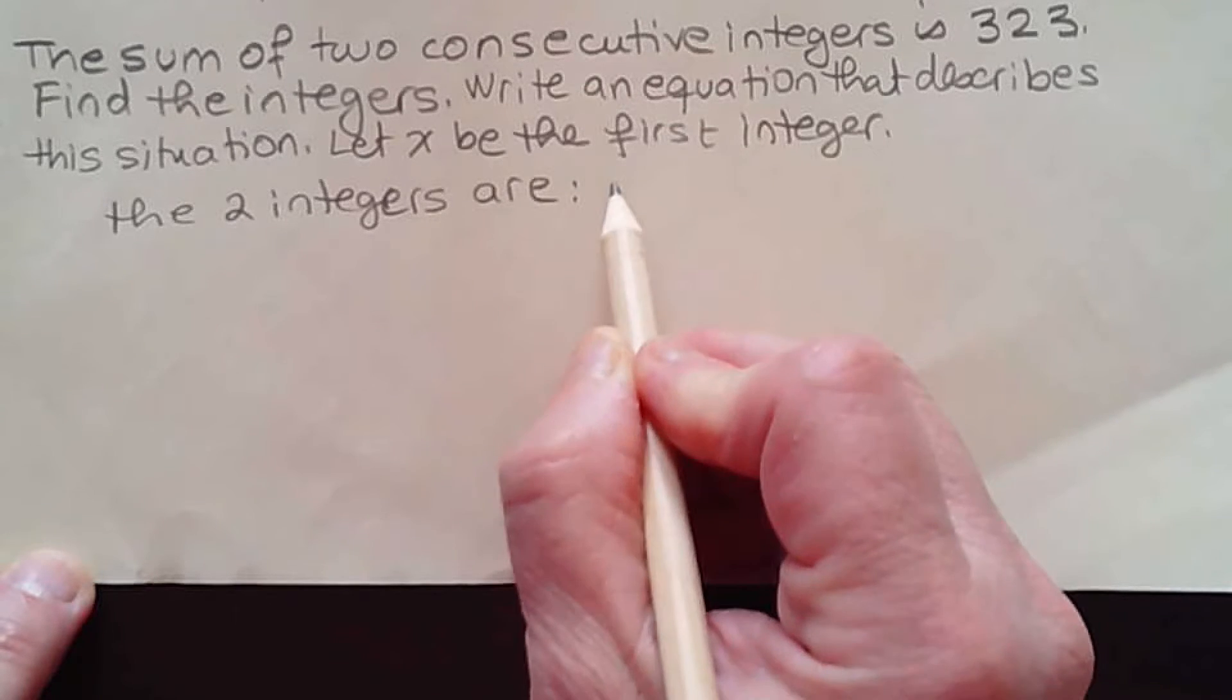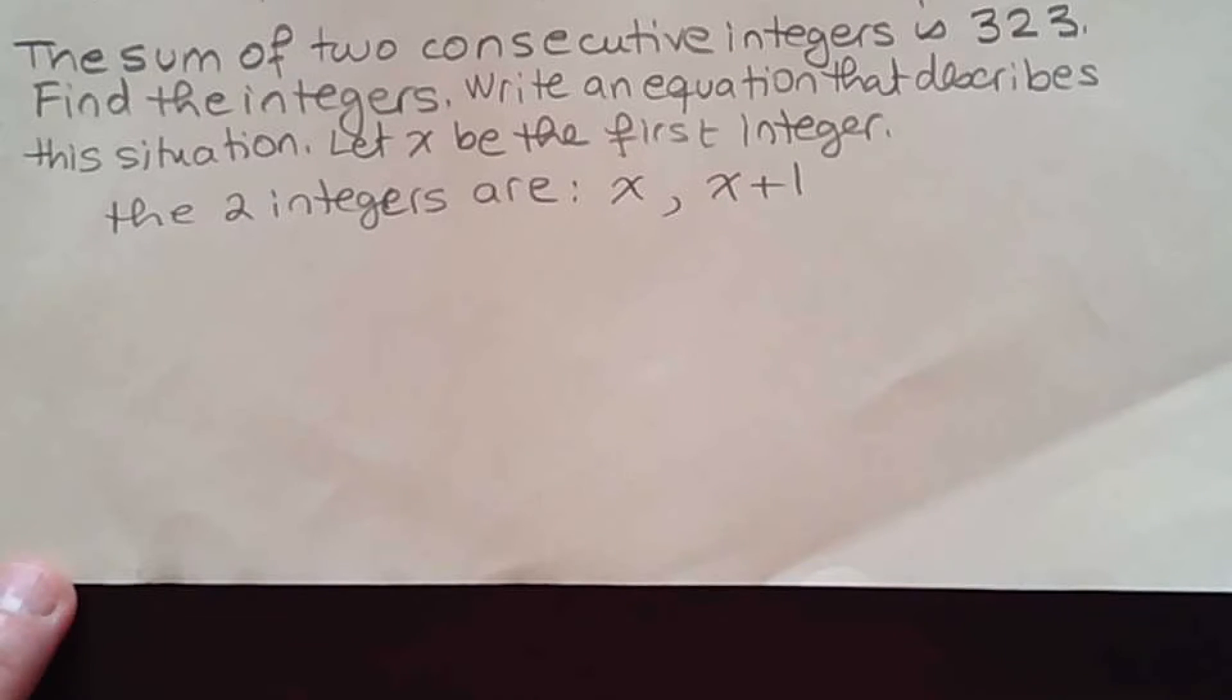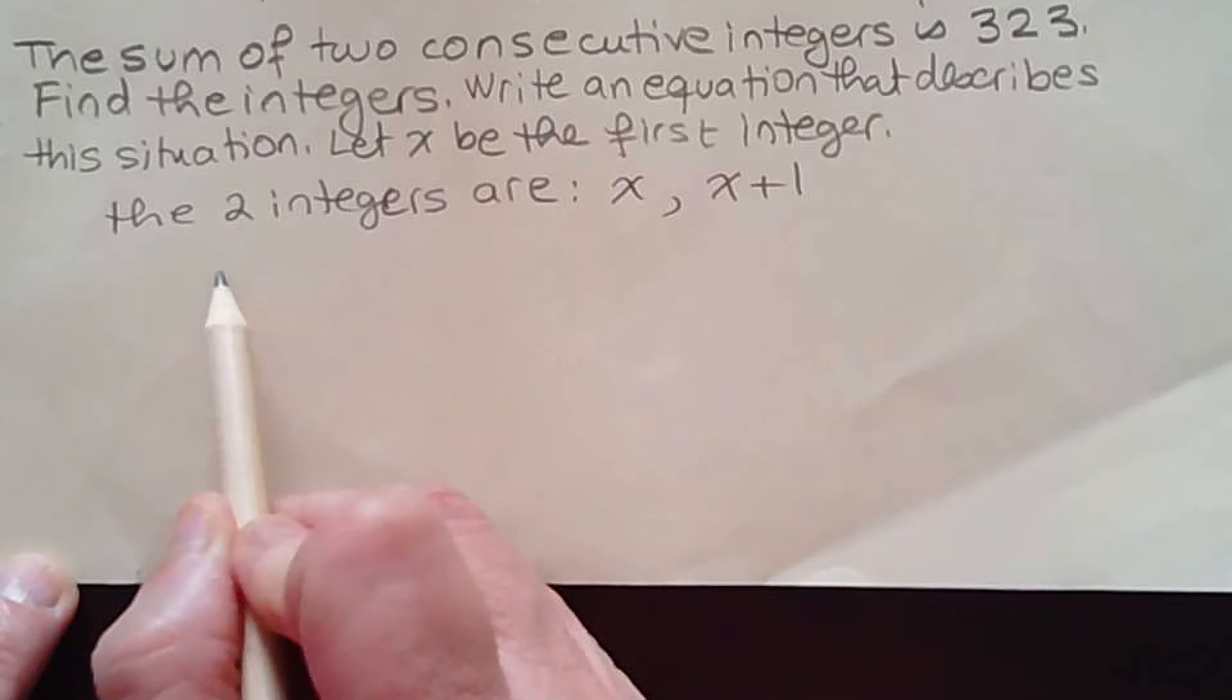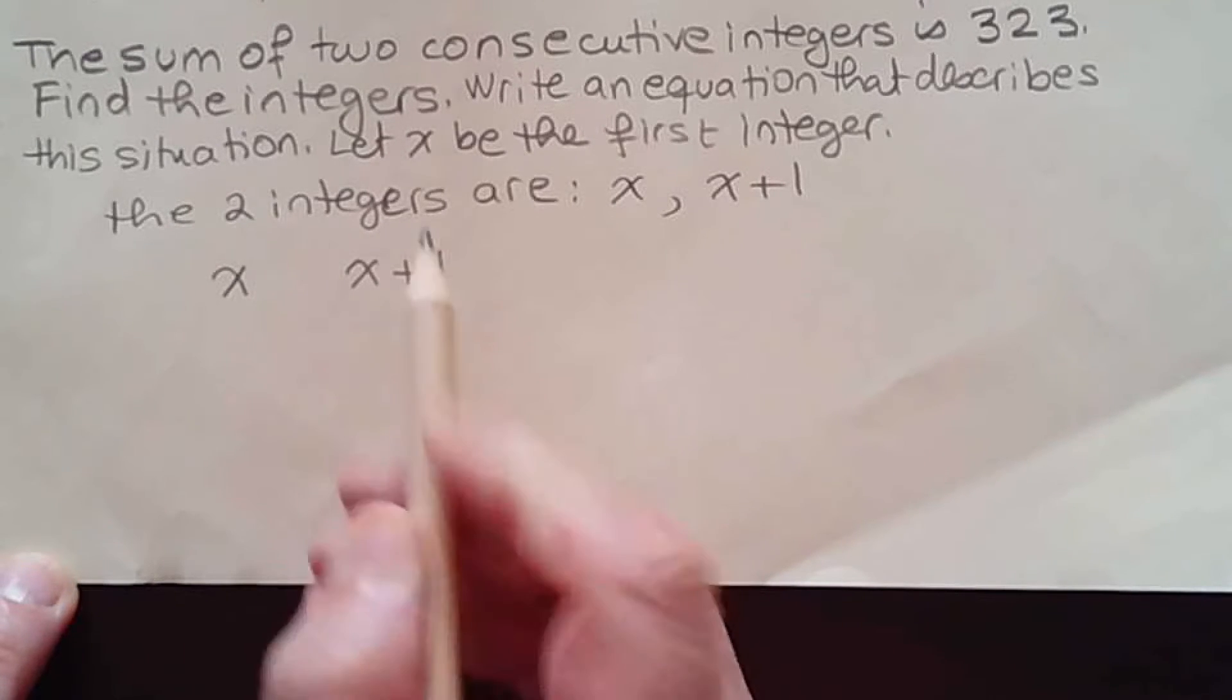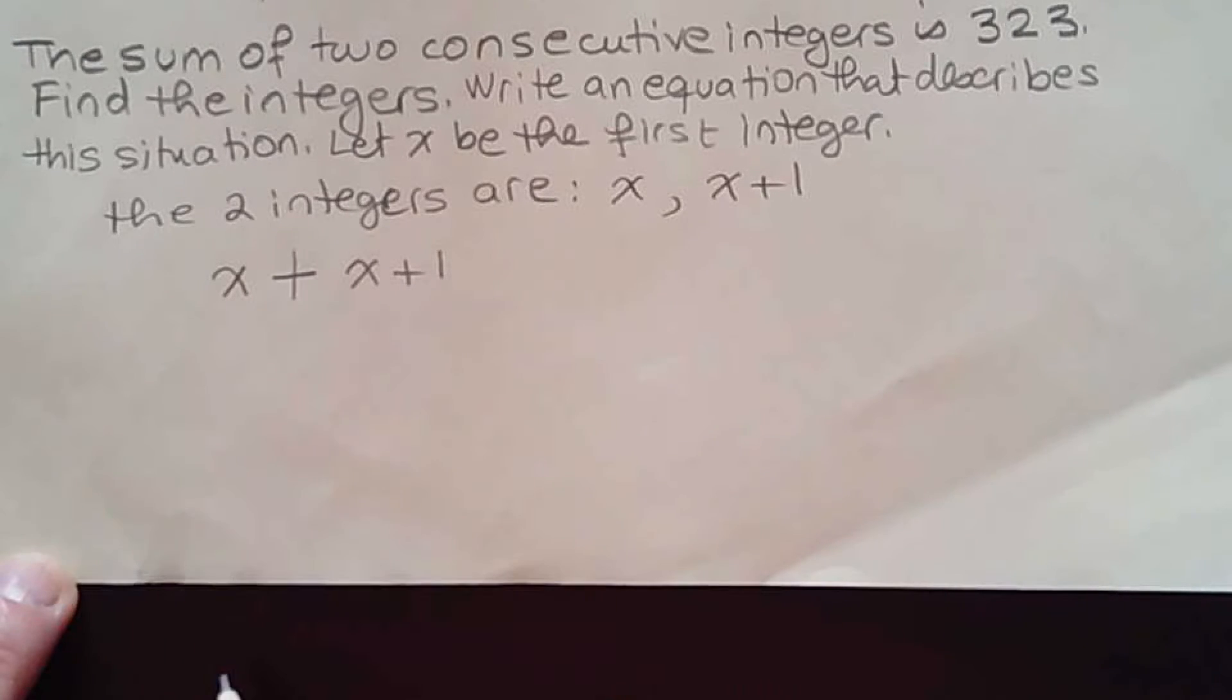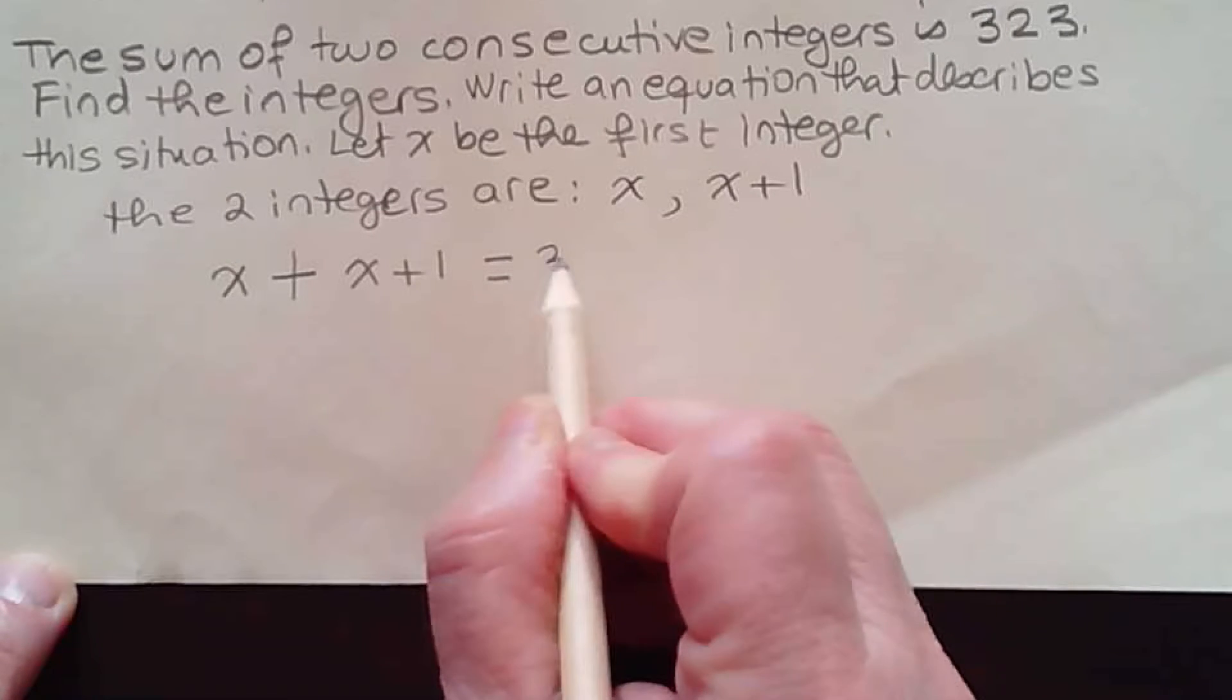These are two consecutive integers. Now the sum of these integers is 323. How do we write an equation that describes that? Well, the sum means I have both of them: x and x plus one. Their sum is equal to 323.